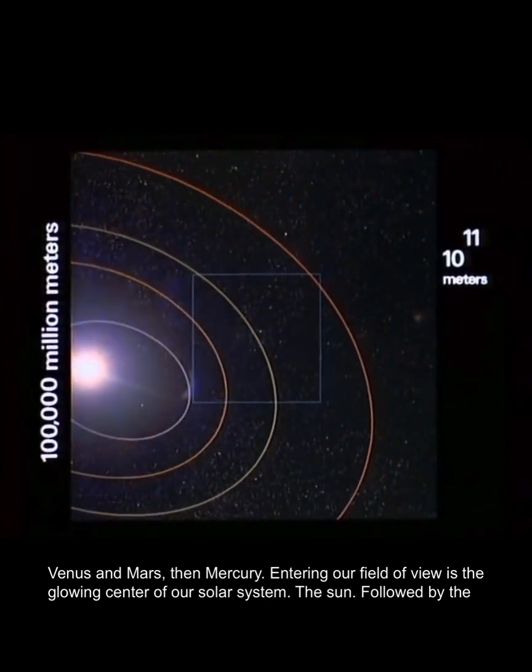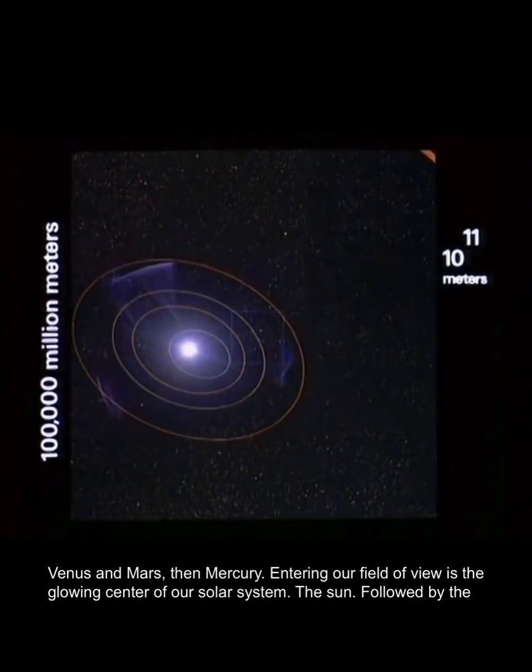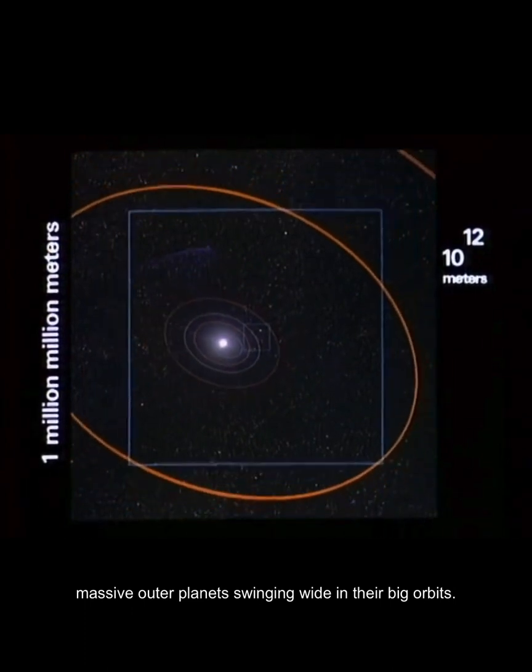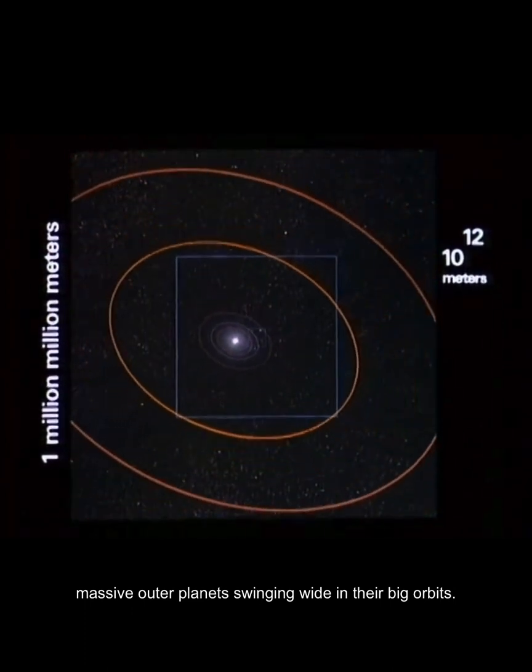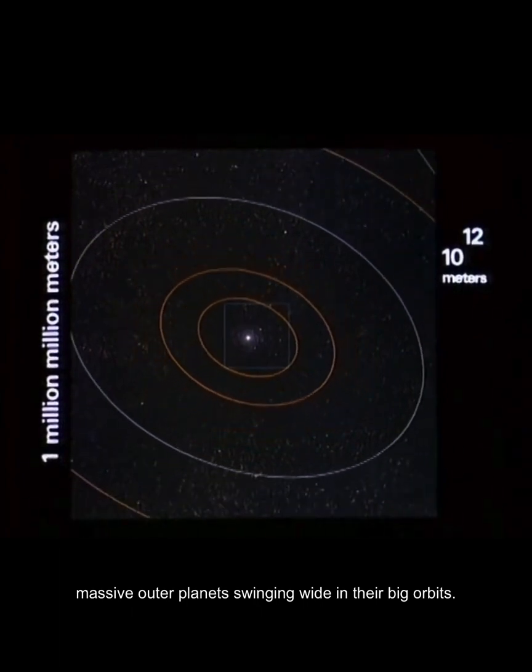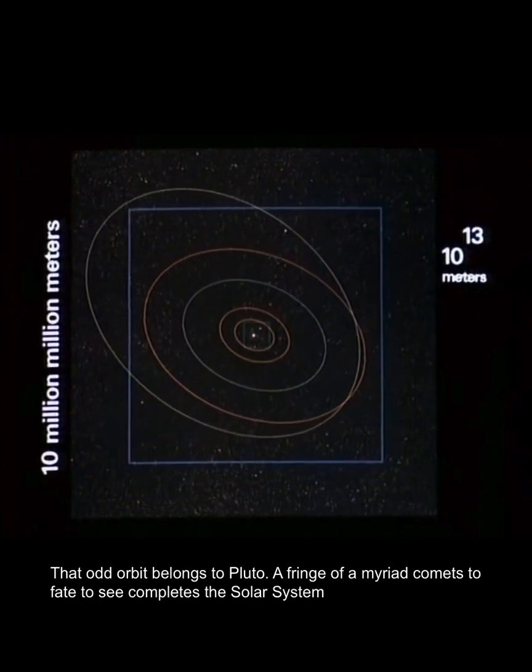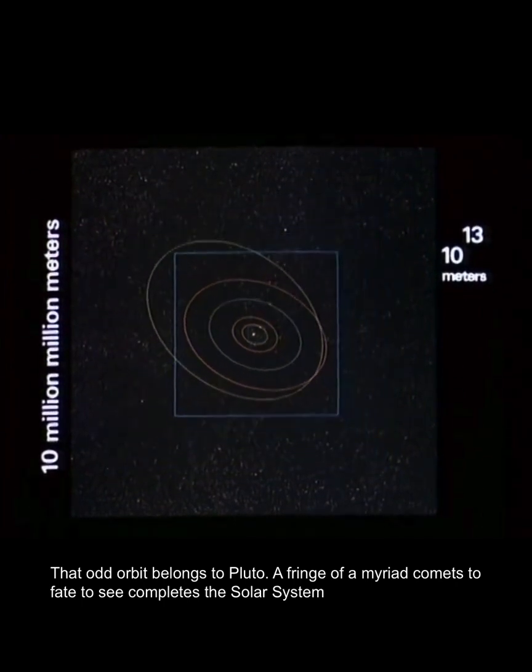Followed by the massive outer planets swinging wide in their big orbits. That odd orbit belongs to Pluto. A fringe of a myriad comets too faint to see completes the solar system.